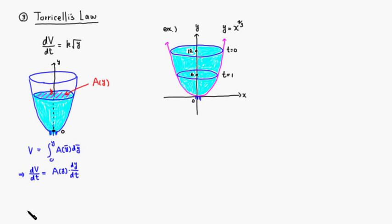Therefore, Torricelli's Law can be rewritten as A(y) dy/dt equals k times the square root of y.